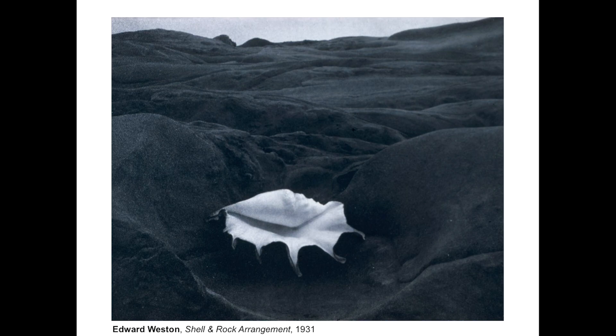Proportion is the feeling of unity created when all parts — the sizes, the scale, the amounts and numbers of objects in an image — relate well with each other. Edward Weston's piece here plays off the idea of scale with the shell in the foreground and the horizon in the background, which is difficult to define in terms of distance and size. He's playing one scale off of another to create a sense of harmony.